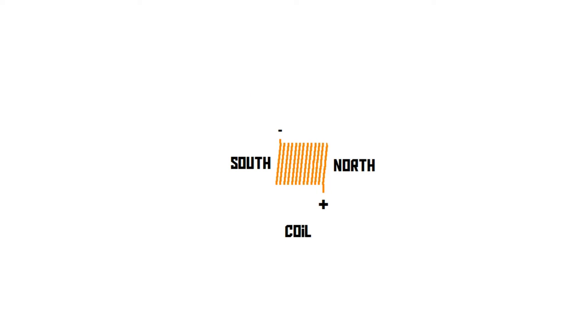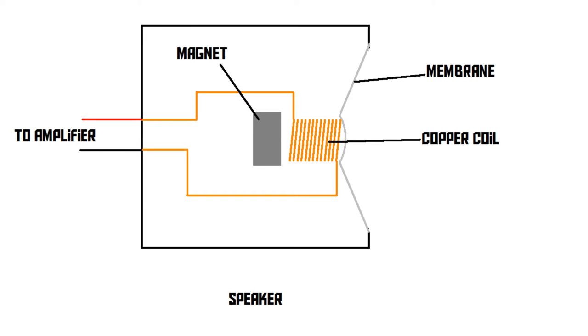But what have these coils and magnets got to do with our speaker? Well, let's take a look at the cross section of a speaker. As you can see, at the front of a speaker there is something called a membrane, also called a cone sometimes. Then behind that there is the coil we just talked about, and behind that there is a magnet.